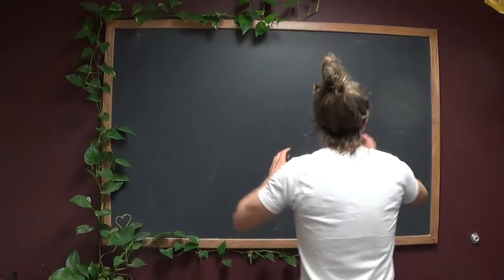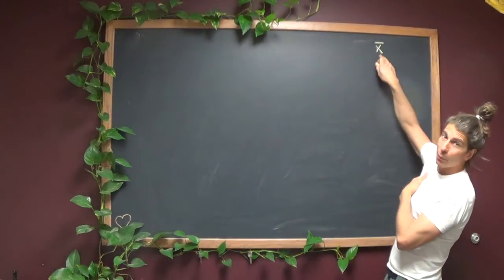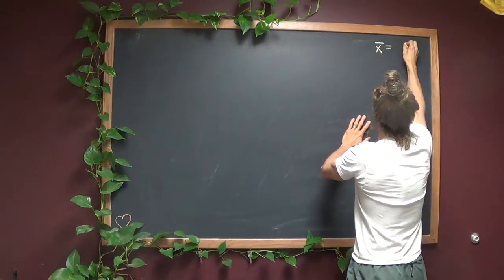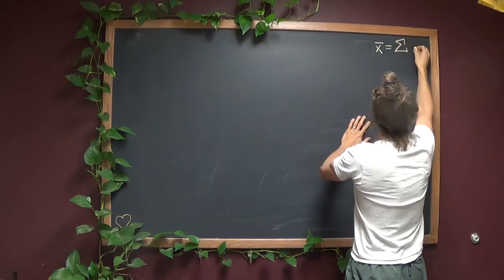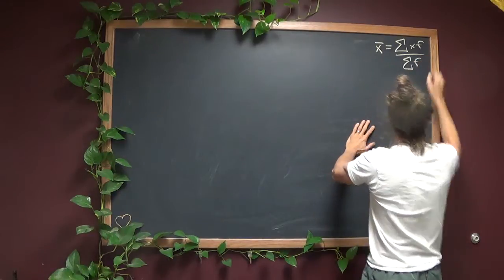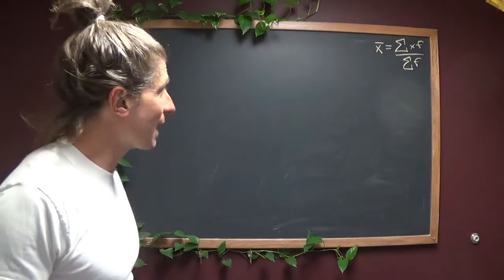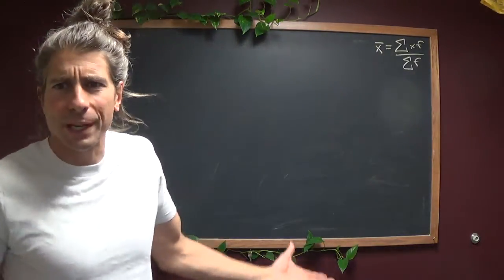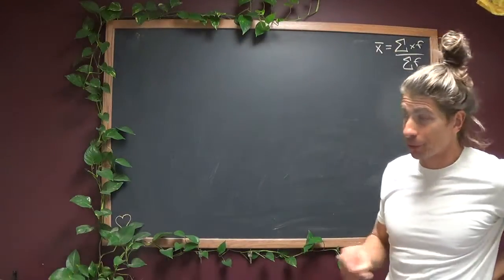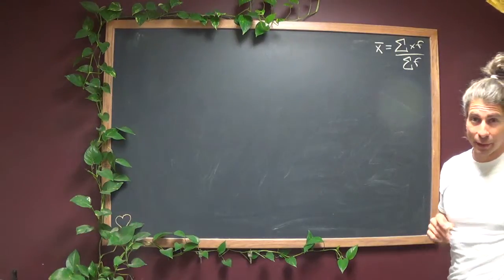In class we already derived the formula for a sample average. You take the summation of all your data times the individual frequencies and divide it by the sum of the frequencies, which ends up being the sample size. We don't use it much anymore because we use technology now, but if you ever needed that formula, it's going to come in handy, and we'll use it later today.